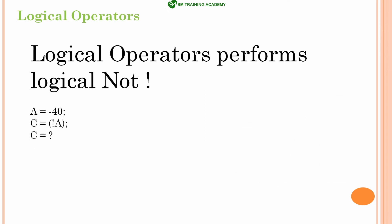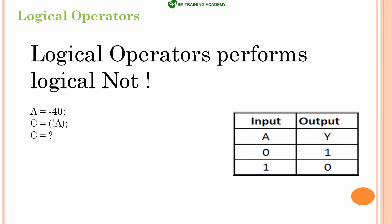Let us discuss logical NOT. A is equal to minus 40 and C is equal to NOT of A. Logical NOT requires only one operand for operation. Looking at the truth table of logical NOT: if the input is 0, we get output true (1); and if the input is true (1), we get output 0. In our case, variable A is holding the value minus 40, which is a true value (1). So NOT of 1 will produce the output 0, and C will be having the value 0 as the result.